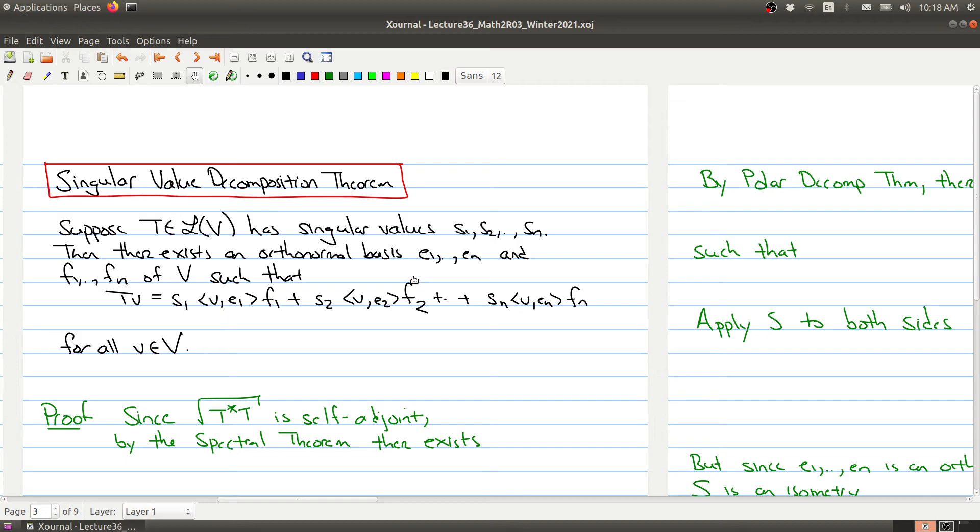And then there exists two orthonormal bases of our vector space V. They may not be the same orthonormal bases because orthonormal bases are not unique. But there exists two orthonormal bases of V such that you can rewrite your operator T(v) as taking the vector V.